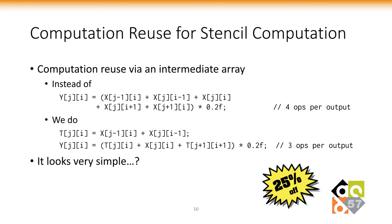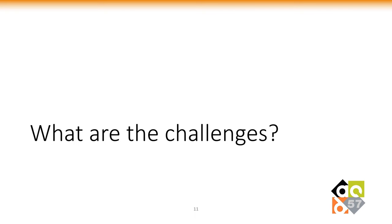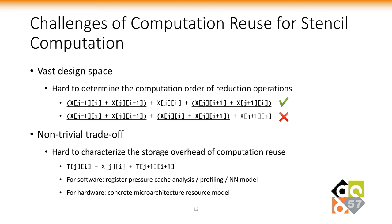We can use an intermediate array. By storing the intermediate result of the reusable operations, we can reduce the amount of computation. It may look simple, but you may be wondering: what are the challenges? The challenges are twofold. One challenge is the large design space brought by the reduction operations — we have to determine a proper computation order. The other challenge is the non-trivial trade-off between storage and computation; we need a way to quantify the storage overhead with a concrete microarchitecture model.